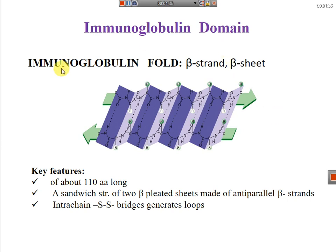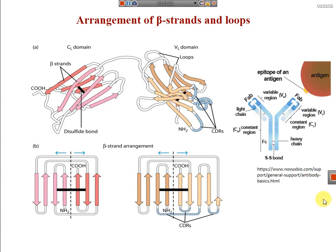The key features of the immunoglobulin domain are: the length of the polypeptide chain making this domain is about 110 amino acids, there are intra-chain disulfide bonds that keep them together, and the sandwich structure has two beta-pleated sheets made up of anti-parallel beta strands.